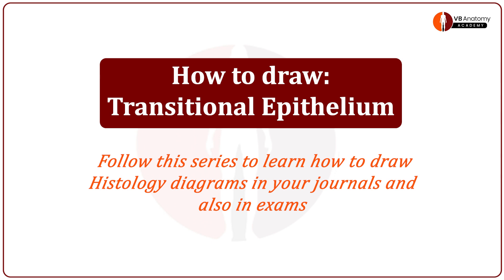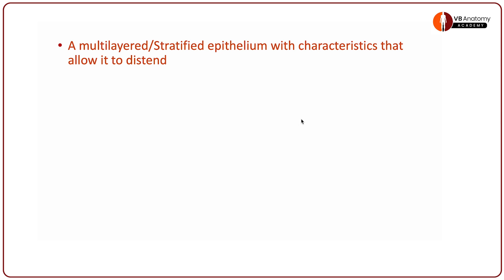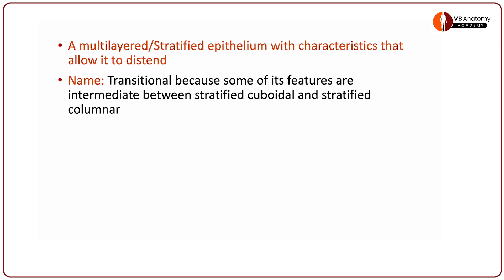So the topic we will begin today is transitional epithelium. Understand that your transitional epithelium is a stratified epithelium with characteristics that allow the epithelium to distend. It is called transitional because its features are intermediate between stratified cuboidal and stratified columnar. It is also called urothelium.